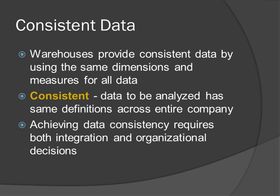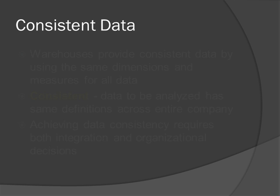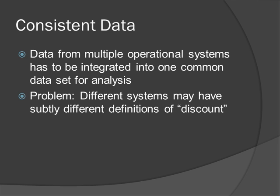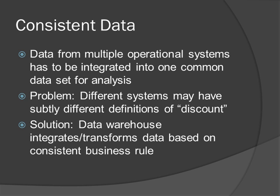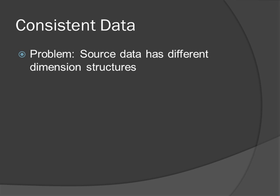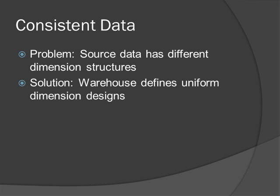A data warehouse provides users with a consistent set of data by using the same dimensions and measures everywhere. Consistent means that the data reported and analyzed has the same definitions across the data warehouse and across the company at large. Consistent data in a data warehouse requires a company to consider both integration decisions and organizational decisions. When source data comes from multiple operational systems, it's necessary to decide how you'll integrate the data into one common view for analysis and reporting. For example, you might discover that each of your company's source systems assigns a slightly different meaning to a term like 'discount.' The data warehouse gives you the opportunity to integrate this disparate data based on a uniform understanding. The data warehouse can also mitigate differences in dimensional structures — such as organizational structures, product hierarchies, or geographical roll-ups — by defining uniform dimension designs.